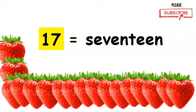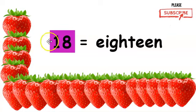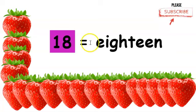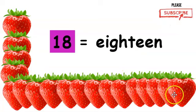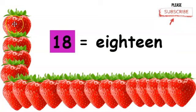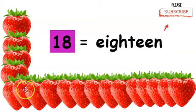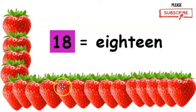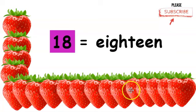Great job, guys. This is the number eighteen. This is how you write eighteen. There should be eighteen strawberries below. Now we will count from one to eighteen. Let's count. One, two, three, four, five, six, seven, eight, nine, ten, eleven, twelve, thirteen, fourteen, fifteen, sixteen, seventeen, eighteen strawberries.